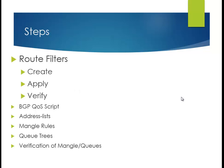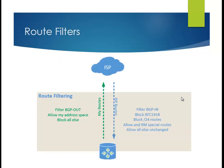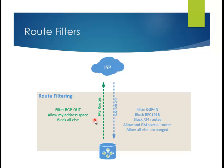The steps we're about to go through: we're going to set up some route filters, create them, apply them, and then verify them. For this configuration, you've got ISP routes coming in and we're going to be doing some filtering. Normally you're going to block RFC 1918. In this case we'd be blocking slash 24s, and then we're going to be allowing and route-marking these special routes - not with a route mark, but with a comment. Everything else we just allow in unchanged. Outbound, normally you'd allow just your individual addressing out. Since I'm just using test routers peered with a gateway to get full routes, I'm actually sending nothing out.